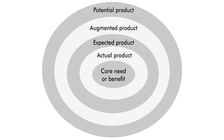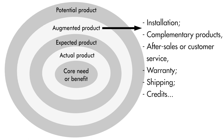What are the main components of a product? Marketing and Management by Kotler & Keller identified five components in the five product levels model, which gives you an idea of how much a company can improve a product. The first is the potential product — what the product can become in the future, including all upgrades and modifications to increase its life. The augmented product represents all additional services and goods like installation, complementary products, after-sales or customer service, warranty, shipping, credits, and so on.